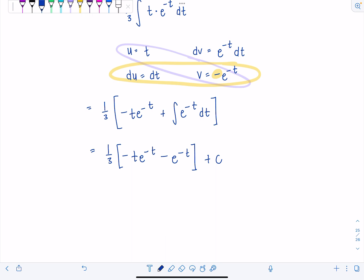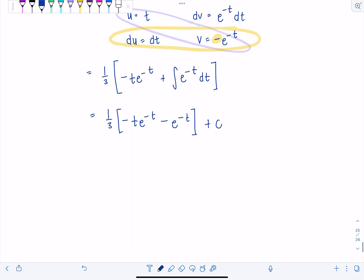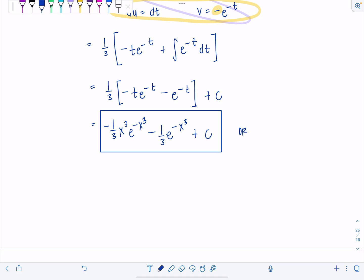And I'll just put a big plus c out here. And then I'm going to back substitute. So remember, t was equal to x cubed. And let's just go ahead and distribute the 1 3rd while we're at it. So negative 1 3rd, instead of t, that's x cubed, e to the negative x cubed minus 1 3rd e to the negative x cubed plus c. So you could leave it like that.